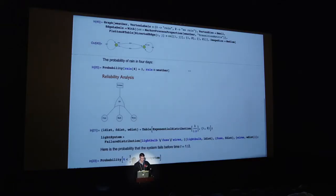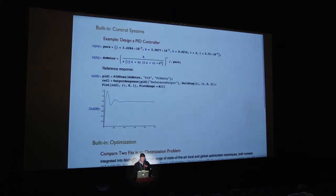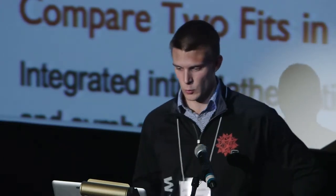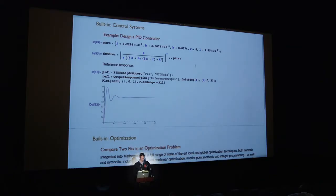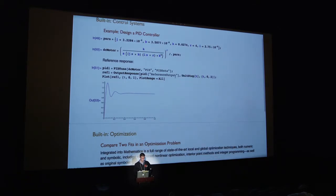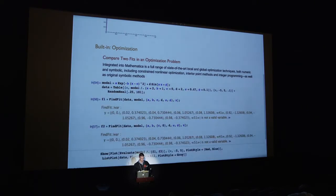Reliability analysis — you can basically model with fault trees, reliability block diagrams, and so on. Here I'm building up basically what I had to do when the brake light on my Mitsubishi didn't work. The failure could be either a fuse, bulb, or the wires. Guess what it was? It was the bulb. There's built-in control systems since two versions back. Here I'm doing a PID tune example, designing a controller for this DC motor model. There's also built-in optimizations.